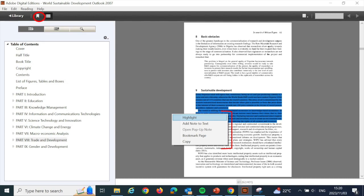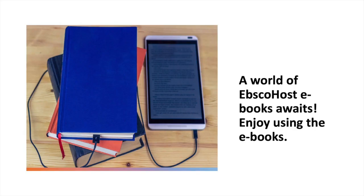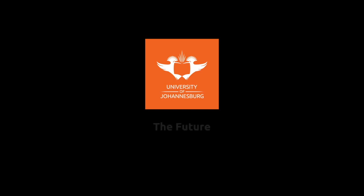Right-click on any part of the text to highlight, add a note, or bookmark a text. Your bookmarks will be saved in the bookmarks area. And that's it — you've learned how to access eBooks from the EBSCOhost database via the UJ library. It's a fantastic resource that can enrich your academic journey. Please reach out to your faculty librarian should you require further assistance. The University of Johannesburg — the future reimagined.